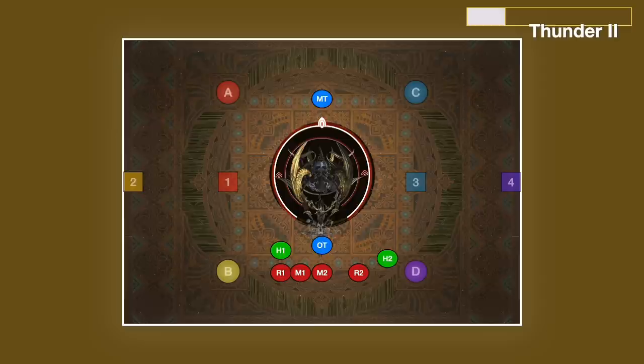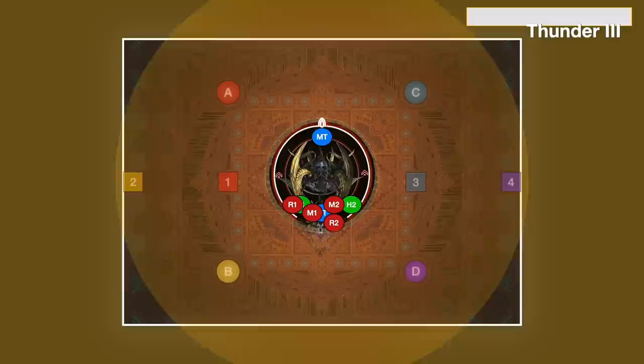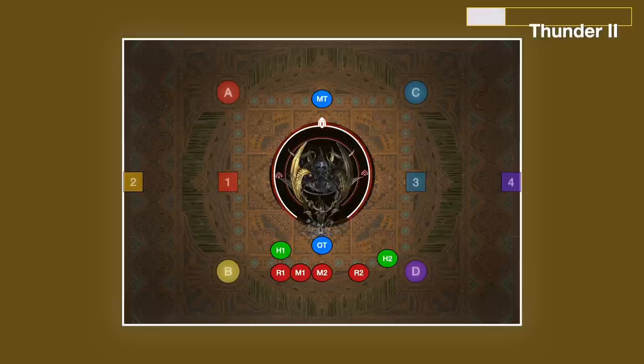There's also two un-telegraphed AoEs you need to look out for. Here you're going to be looking at the cast bar instead of the animation. If you see Thunder 2 cast, don't be in front of the boss, as it's going to be a conal AoE in front. If you see Thunder 3 being cast, get inside the hitbox, as it's a donut that aligns more or less perfectly with the boss's hitbox. The fight will always start with Thunder 2 targeting the main tank, so make sure that you move out of the way.